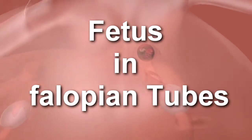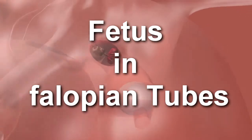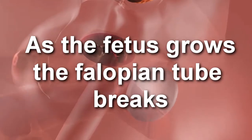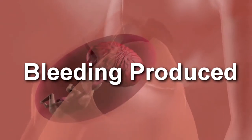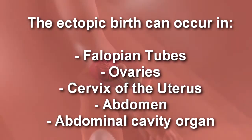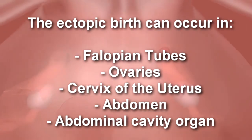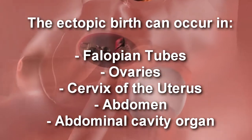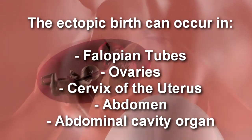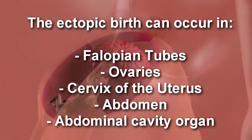An ectopic birth occurs whenever a fertilized egg, instead of implanting in the uterine cavity, is implanted on the outside of the cavity. This can occur in the fallopian tubes, in the ovaries, on the outside of the uterus, or even on an abdominal organ. It is a pathology which is very dangerous and can even put at risk the life of the mother.